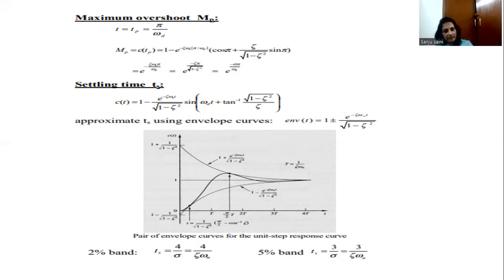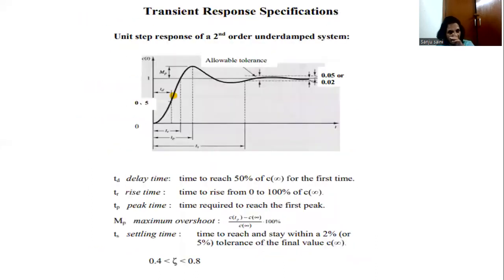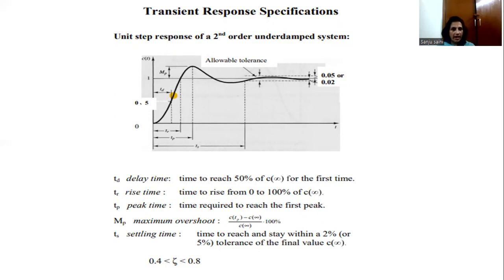These are all the transient state specifications of the second order system. We have not taken into account the steady state specification — there is only one steady state specification, which is the steady state error. That is the error between the desired output and the actual output as time t tends towards infinity. We can judge whether the system is working properly or not by looking at the values of these specifications. Thank you so much.